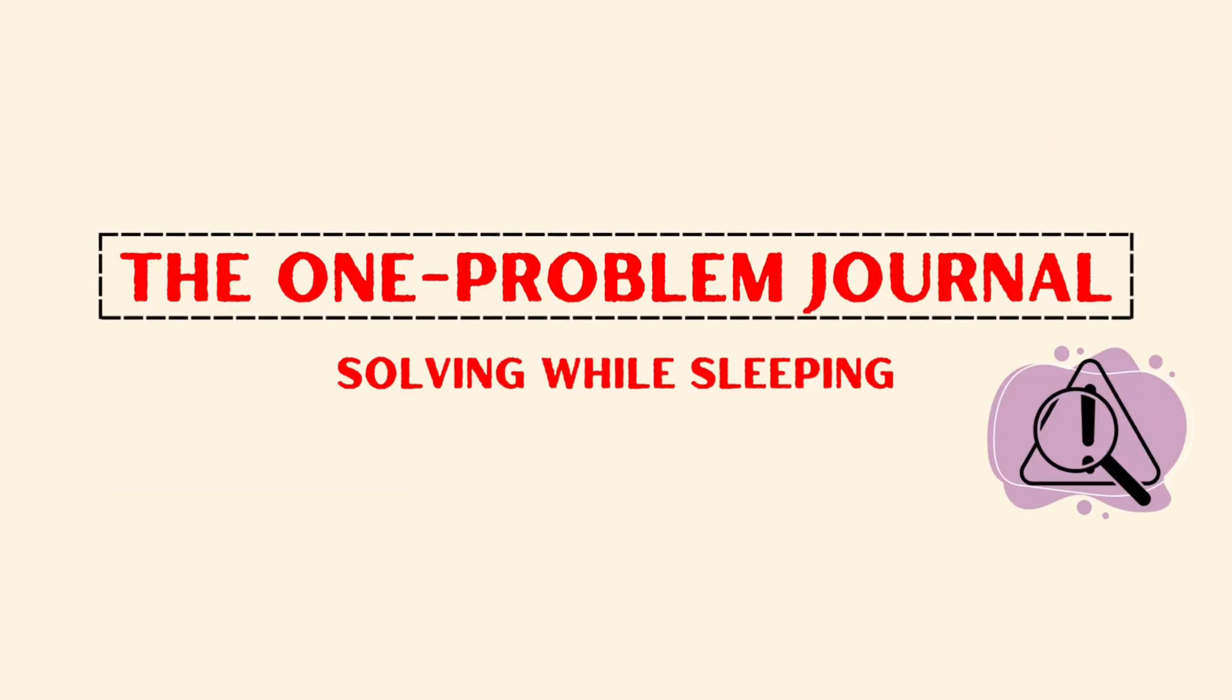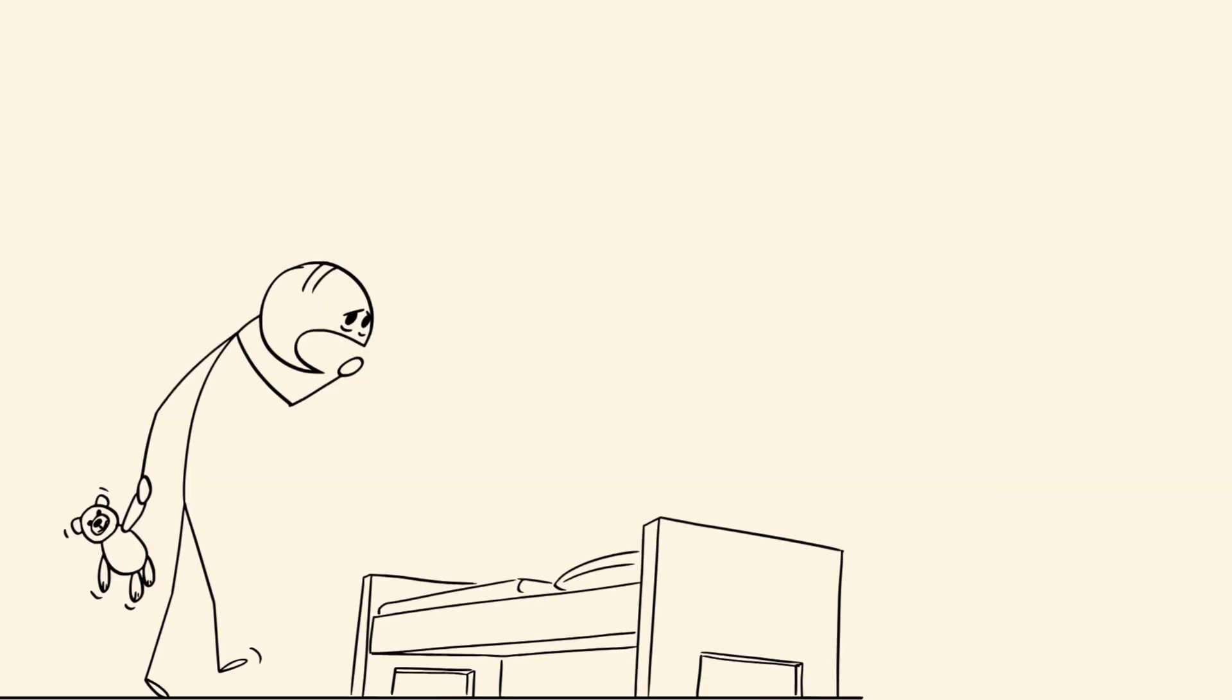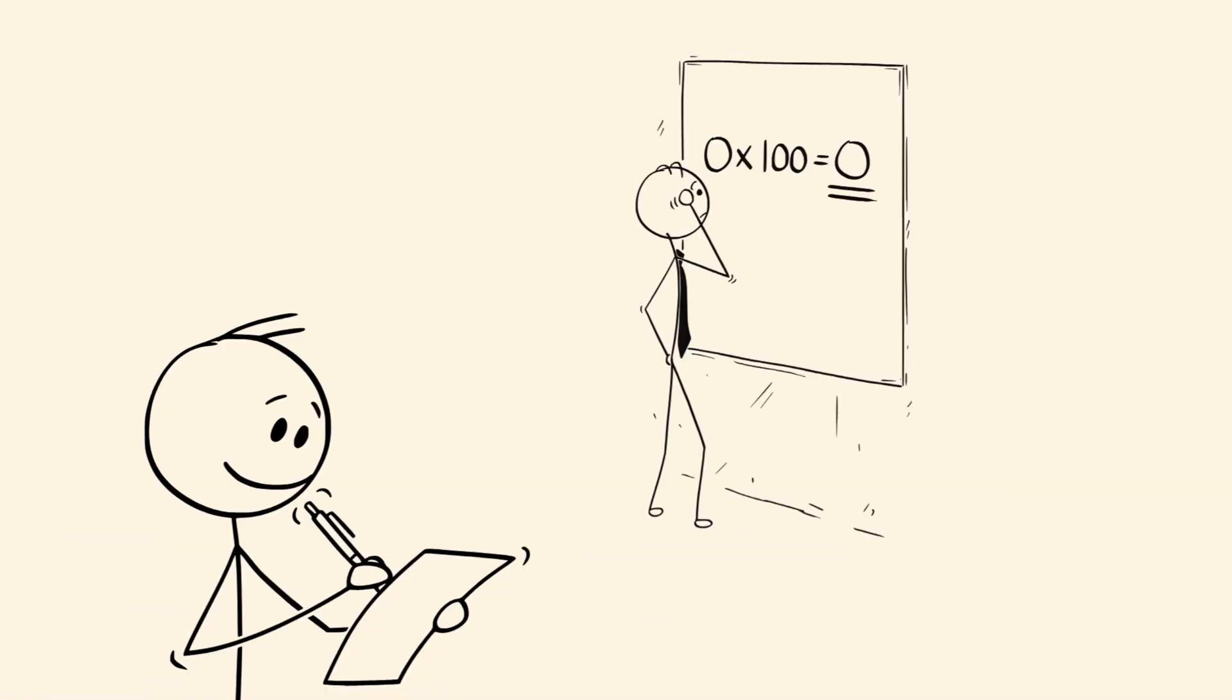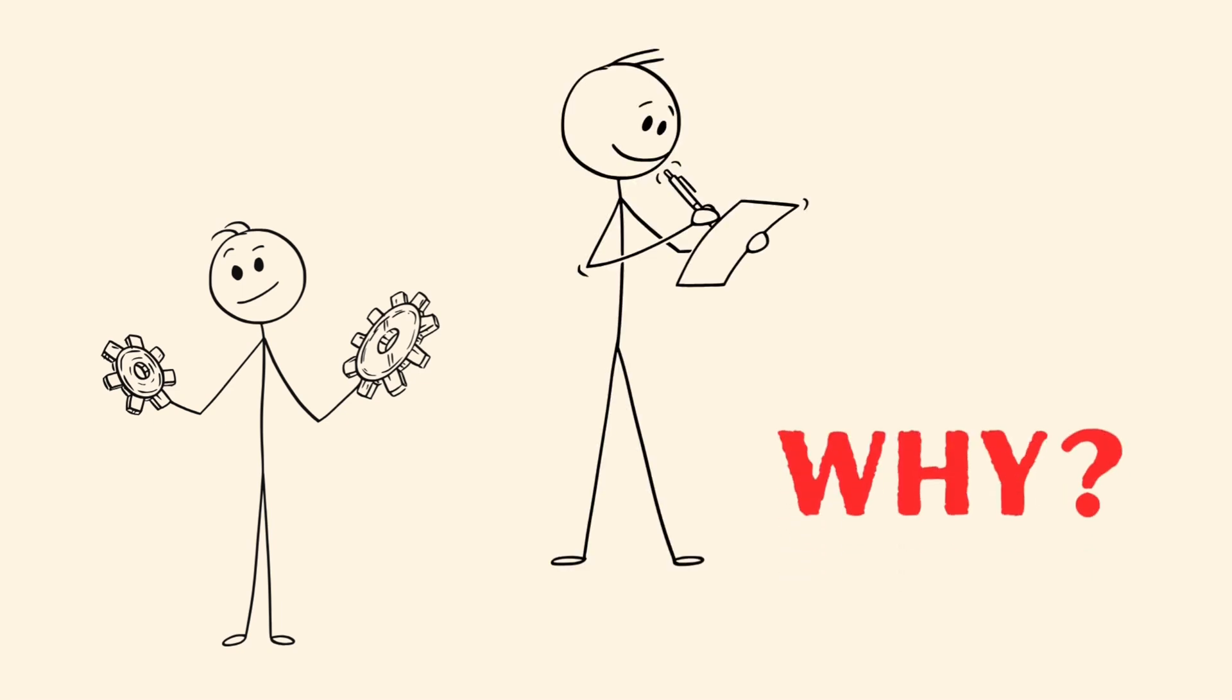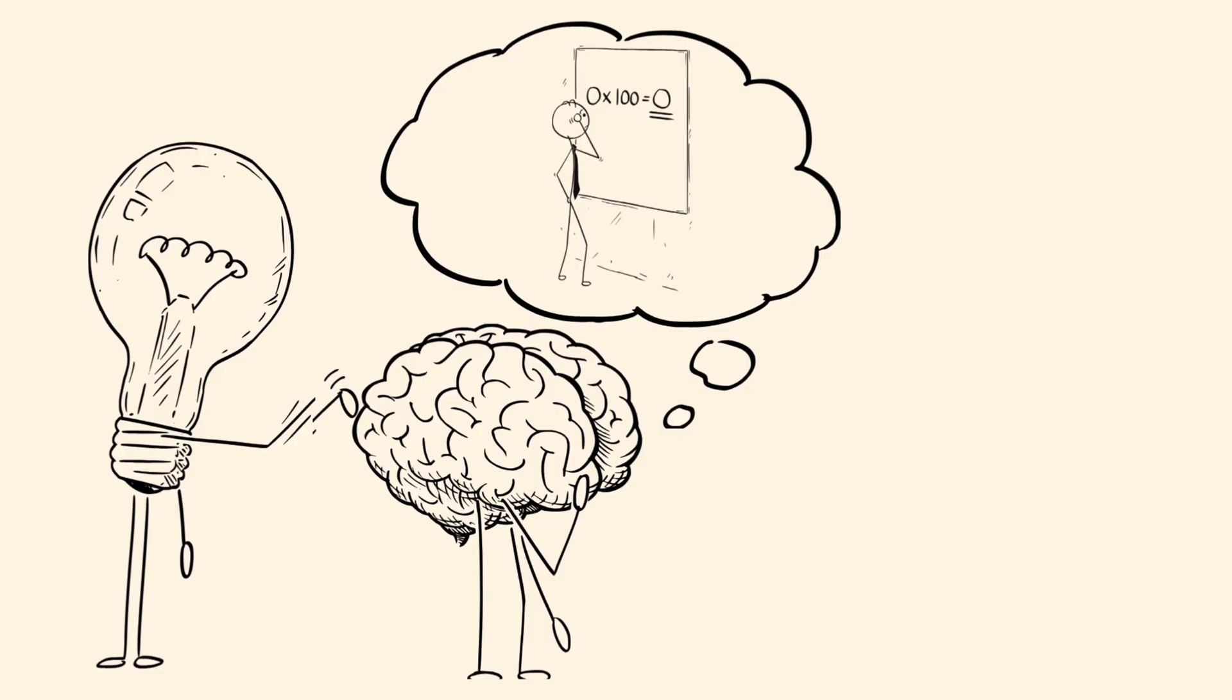The One Problem Journal. Solving while sleeping. Before bed, Ethan writes down one single problem he couldn't solve during the day. He doesn't try to fix it. He just frames it. Why? Because the brain continues solving problems during sleep. It's like planting a seed for tomorrow's breakthrough.